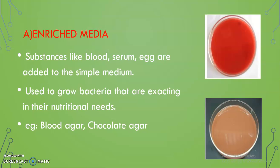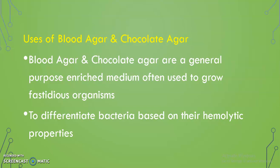First, enriched media: substances like blood, serum, egg, etc. are added to simple media to enrich it. This enriched media is widely used for growing fastidious microorganisms that have more nutritional requirements. Examples are blood agar and chocolate agar. Blood agar and chocolate agar are widely used as enriched medium for growing fastidious organisms, and blood agar has a special purpose — it can be used for differentiating bacteria based on their hemolytic properties.